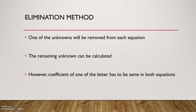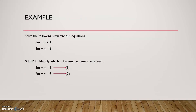If we look at an example that should clarify. Solve the following simultaneous equations: 3m plus n equals 11, and 2m plus n equals 8. We have two equations and two unknowns, so we can solve them simultaneously.